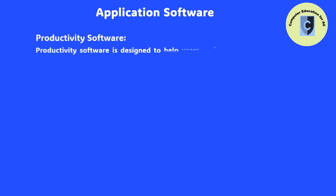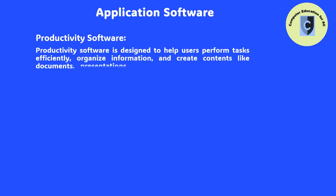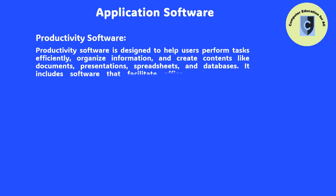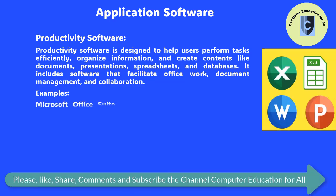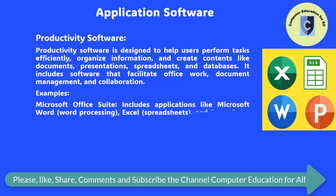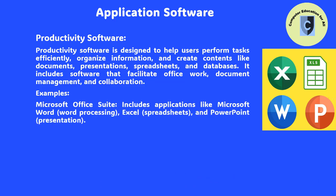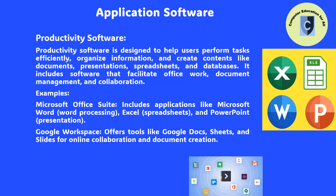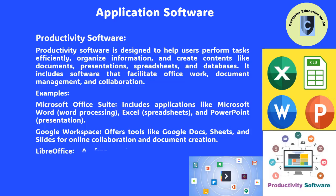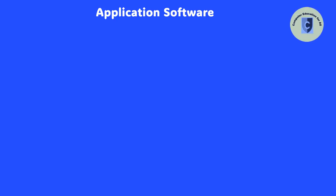Productivity Software: Productivity software is designed to help users perform tasks efficiently, organize information, and create content like documents, presentations, spreadsheets, and databases. It includes software that facilitates office work, document management, and collaboration. Examples include Microsoft Office Suite (Microsoft Word for word processing, Excel for spreadsheets, and PowerPoint for presentations), Google Workspace (Google Docs, Sheets, and Slides for online collaboration), and LibreOffice, a free and open-source office suite with applications similar to Microsoft Office.